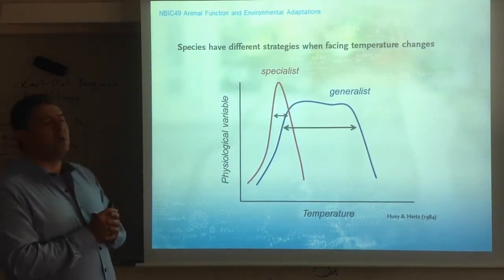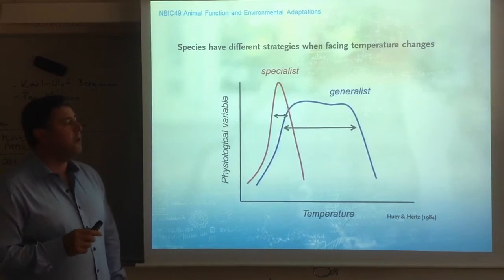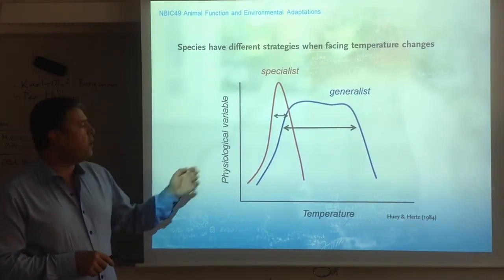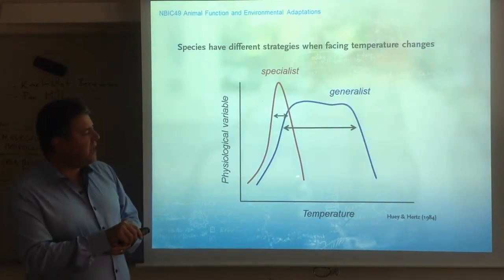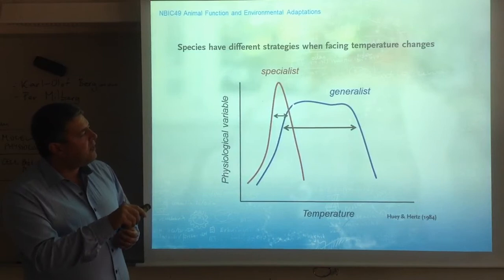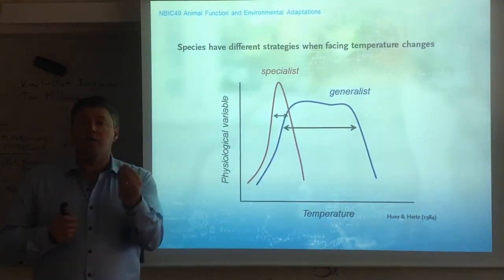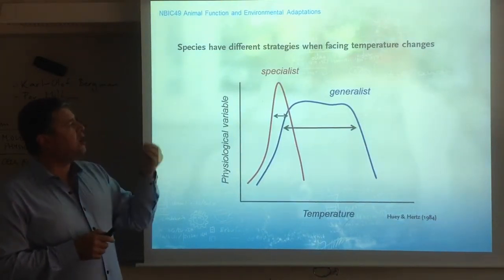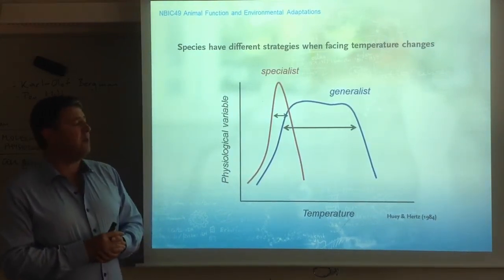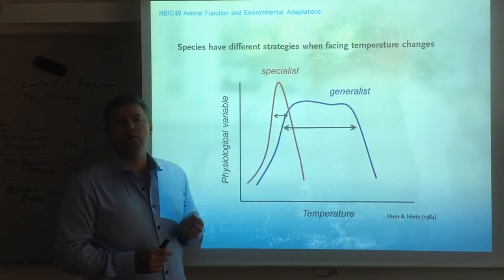You have generalist animals and you have specialists. Generalists are animals that can tolerate a wide temperature margin and do rather well — a mean physiological variable like oxygen consumption stays adequate across a broad temperature range. A specialist has a much narrower margin. If you want a pure specialist, look at Antarctic fish, which are specialists at minus 1.86 degrees centigrade. Outside that temperature, they generally perform less well.